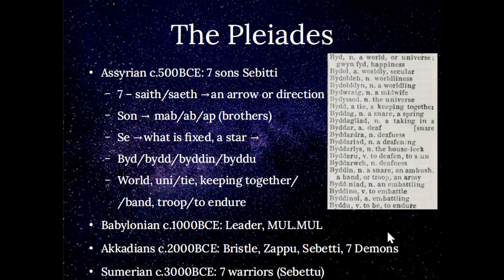Let's look at the Assyrians. Seven in Welsh is 'saith,' emblematic of an arrow or direction. 'Se' from the Sebeti is what is fixed and relates to a star. The next syllable has a number of meanings shown in the Welsh dictionary: a world, universe, tie, keeping together, a band, and to endure. So we have a complete description of the star cluster — something going in a group or band, in a direction, enduring, held together. We are tied to it; it is the world and the universe.